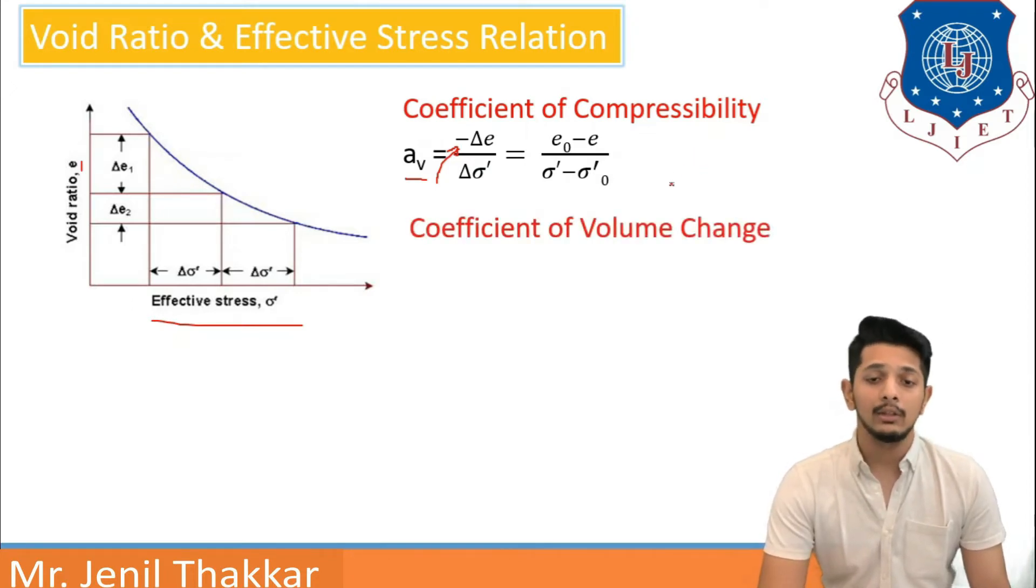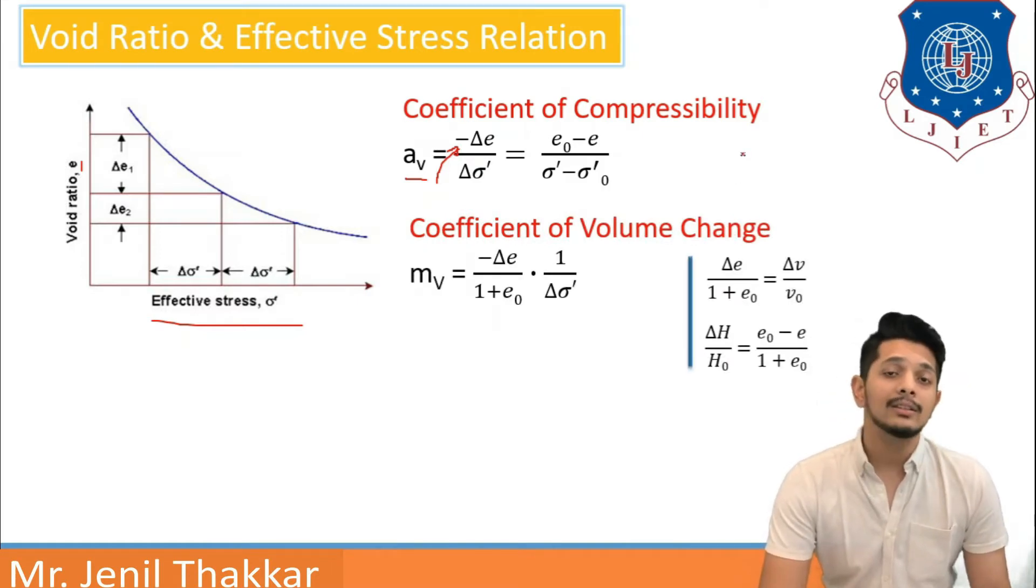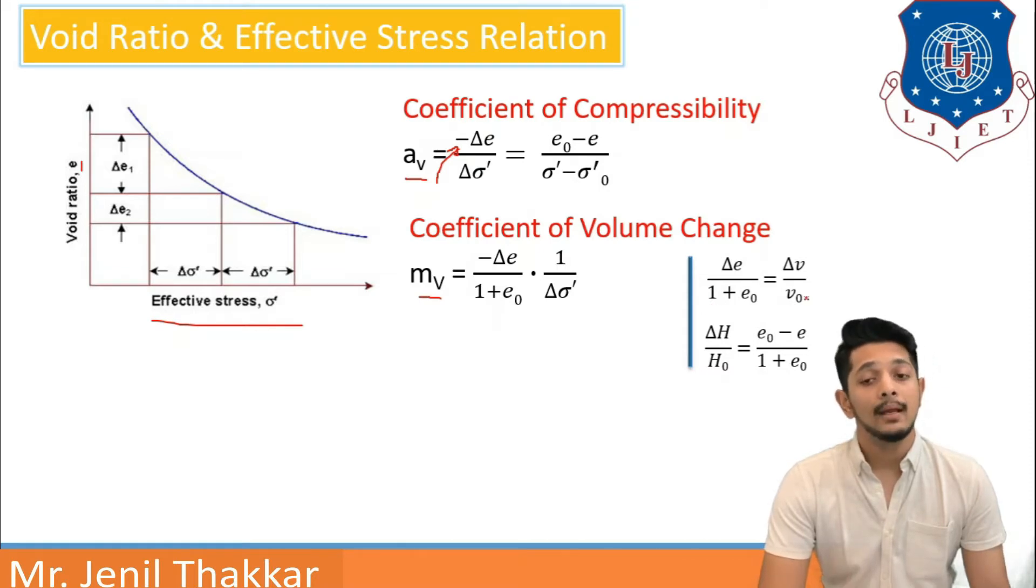Another coefficient of volume change is defined as change in volume per initial volume. It can be written as delta V upon V0. Empirical formula for that is Mv, denoted by Mv, and formula for Mv is minus delta E upon 1 plus E0 into 1 by delta sigma dash. It can also be written as delta V by V0 equals delta E upon 1 plus E0.